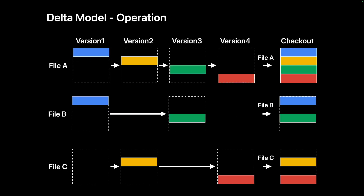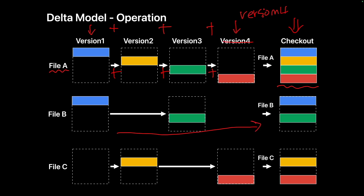In version control systems, the command to recreate a specific state is called checkout. To recreate a state, you have to apply all the changes from the first version to the desired one. When version 4 is checked out, the contents of the file is the result of combining versions 1, 2, 3, and 4. The same applies to File B and File C.